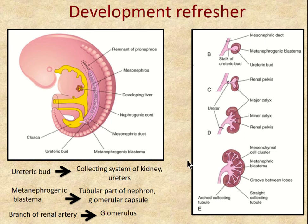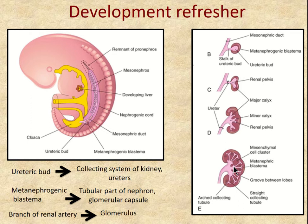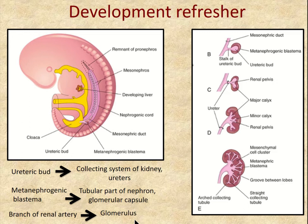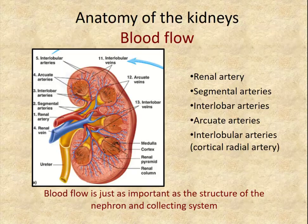As a developmental refresher, the adult kidney has two sources. The ureteric bud develops into all of the collecting system, including the minor calyces and structures draining from the medullary pyramids. The metanephrogenic blastema, from the mesoderm surrounding the ureteric bud, develops into the medulla and cortex. The renal arteries get smaller and smaller to form vasculature that grows into the glomeruli, which are tufts of capillaries.